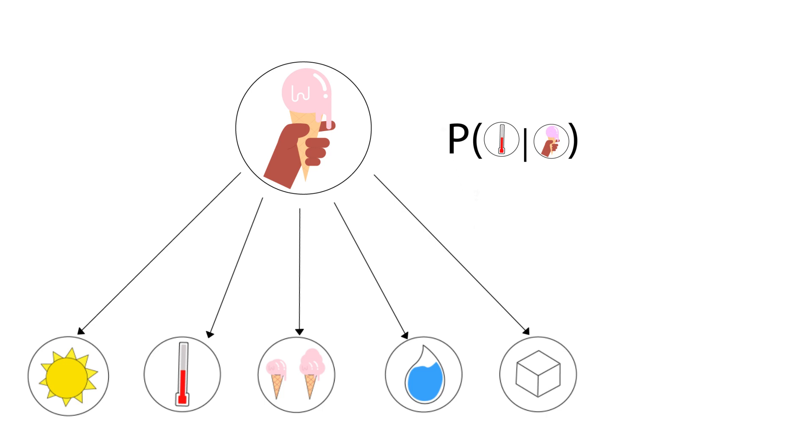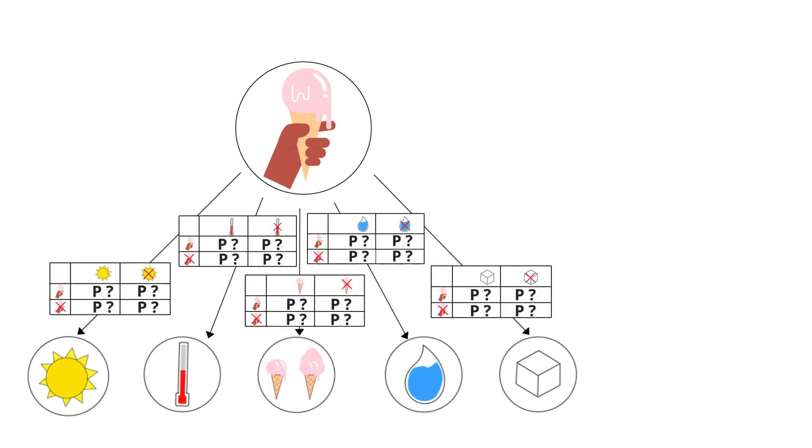To have these simple conditional probabilities as the network parameters, we may naively assume that the factors are independent, conditioned on the melting rate. This reduces the number of necessary parameters in the system immensely.